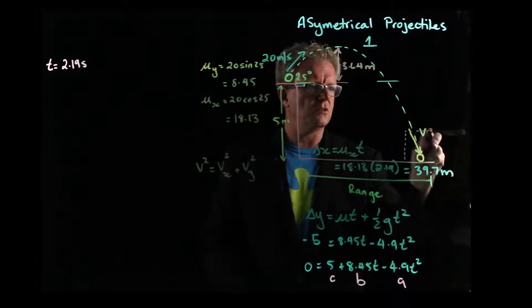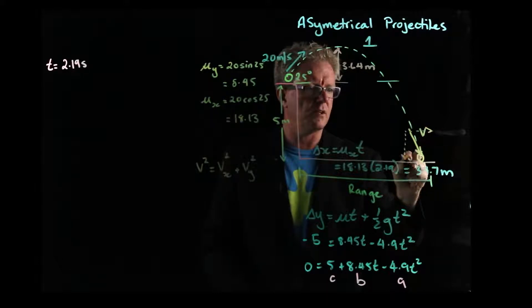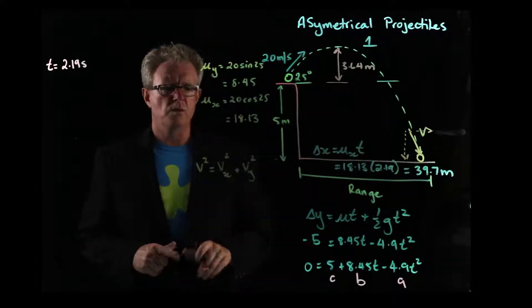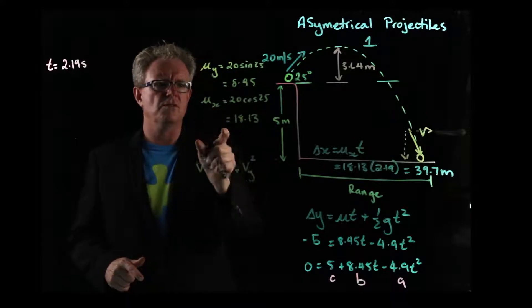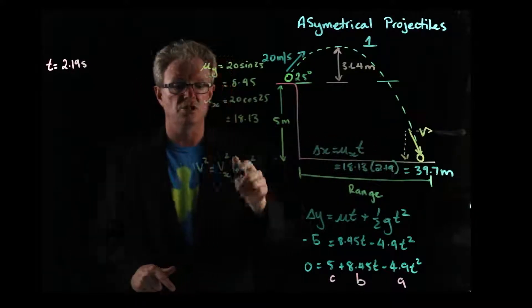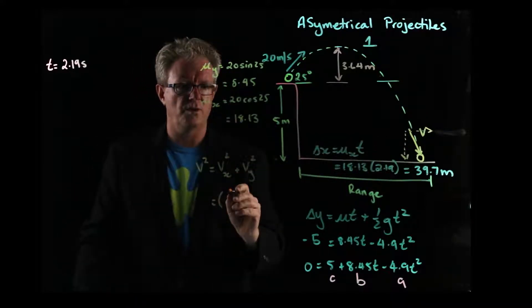So if I do that at the right size, like that. How do we find that? Well, the x component of the velocity is constant. It doesn't change. So let's write that in.